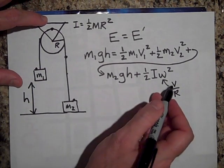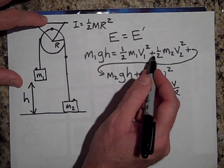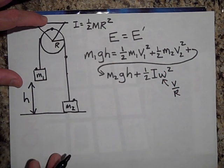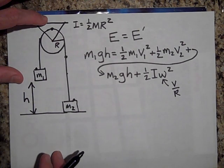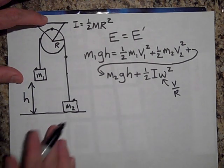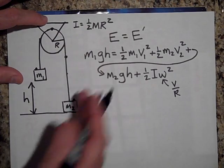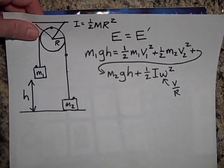And that V is the same as that V is the same as that V. So all of those Vs can be the same. And so as you can see, you can solve, I won't fill in the details, but this is how you'd solve this problem.